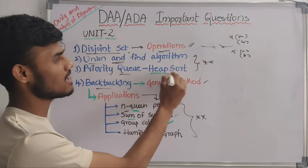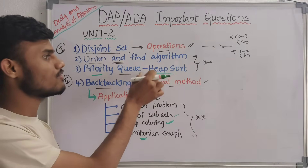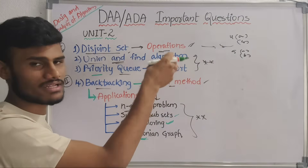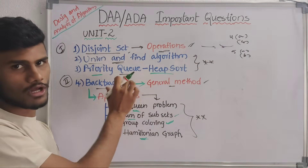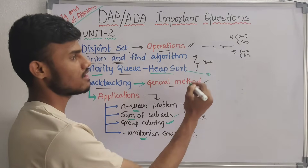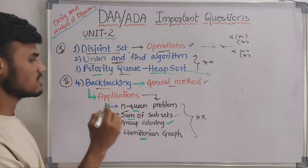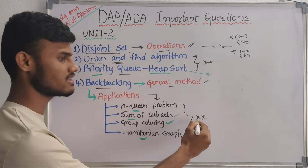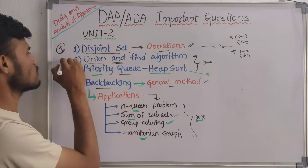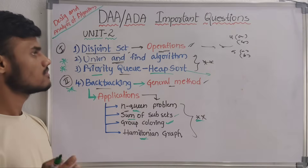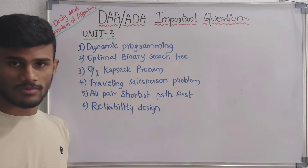Hamilton graph — you have already done this in DM subject. Graph coloring also you have to use it in DM. N-queens problem you have to use it for AI. Here you need to know heapsort and the priority queue. The priority queue is two types. This is all about the second unit.